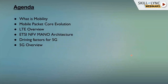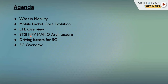This is the agenda for today's webinar. We will start with what is mobility as a technology, go through the basics of mobility, then the mobile packet core evolution from 2G to 5G and the driving factors. Next, we will go through the LTE overview — LTE stands for long term evolution, also called 4G technology in GSM. Then we will cover why we need NFV, network function virtualization, and the NFV manual architecture as defined by ETSI — the European Telecommunication Standards Institute.